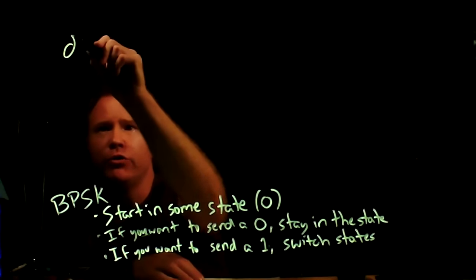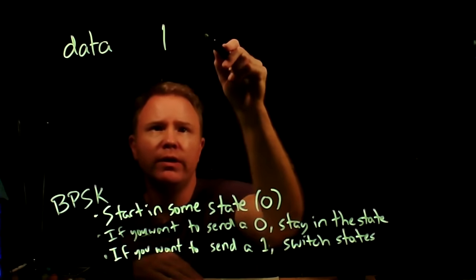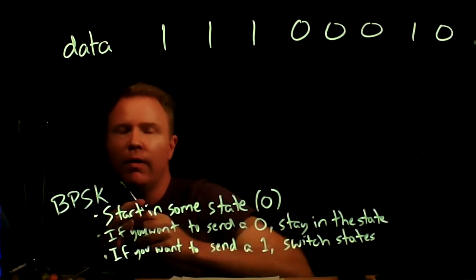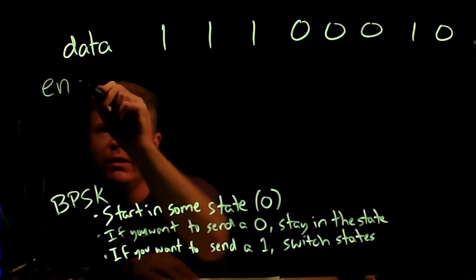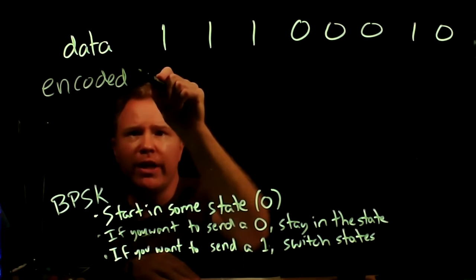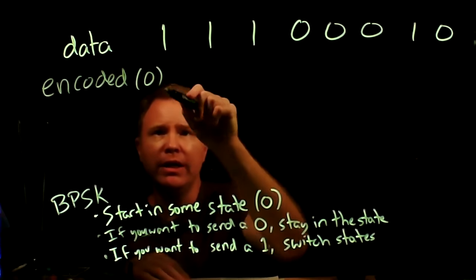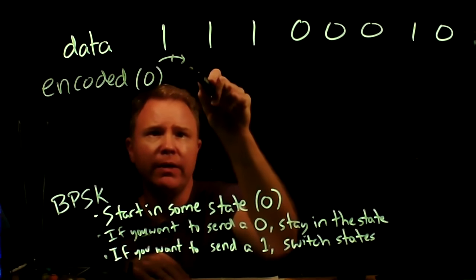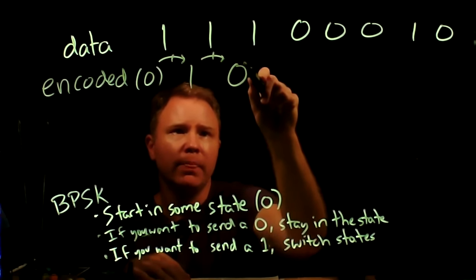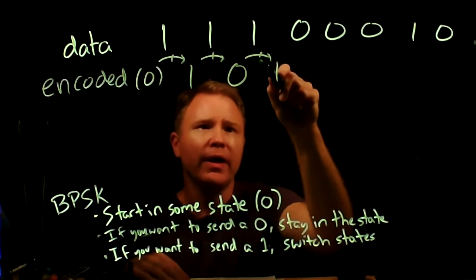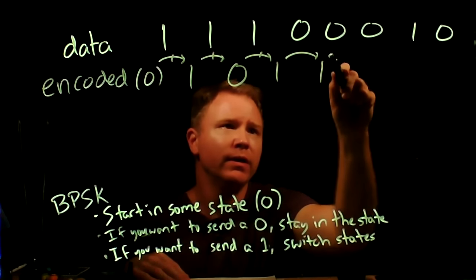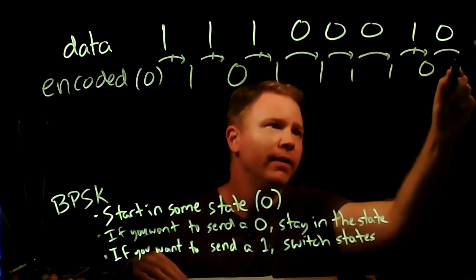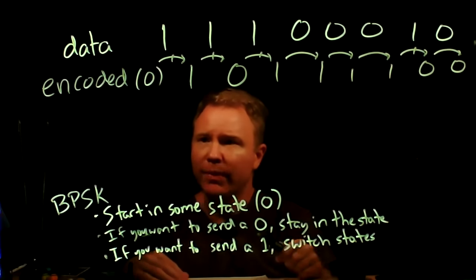Let's do an example. Say my data is: 1, 1, 1, 0, 0, 0, 1, 0. I pass it through my differential encoder. I start with state zero. My data is a one, so I flip it. My data is a one again, so I flip it back. My data is a one again, so I flip it to one. Now I have zeros, so I stay at one for three steps. My data is a one, so I flip to zero, then data is zero so I stay. That's my encoded version — that's what I transmit.